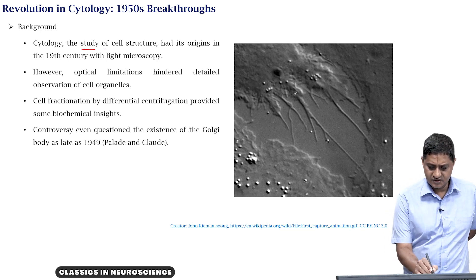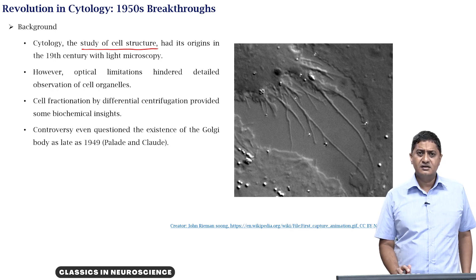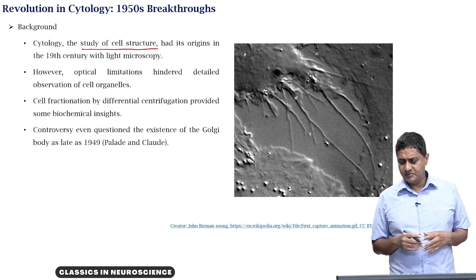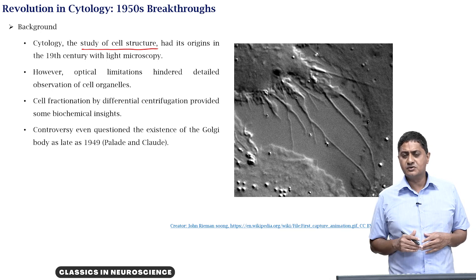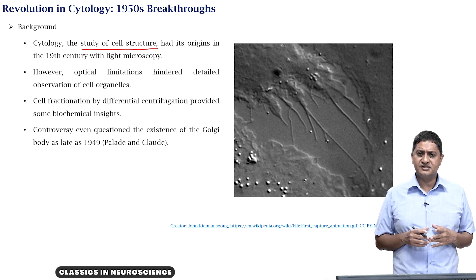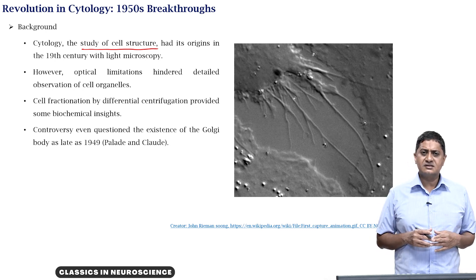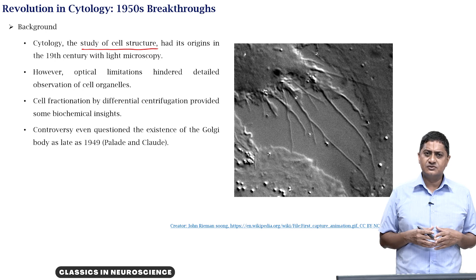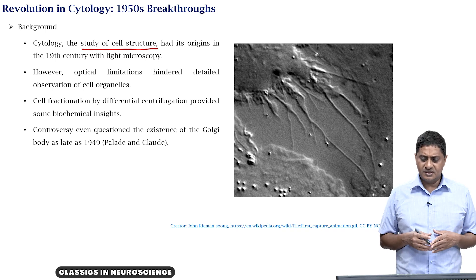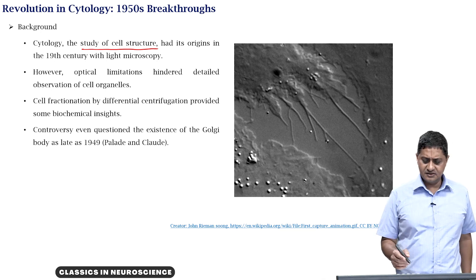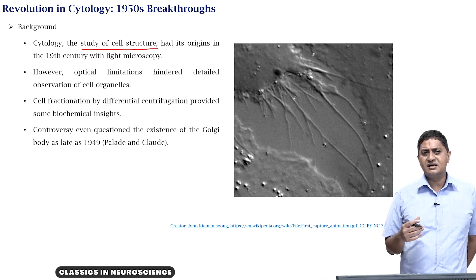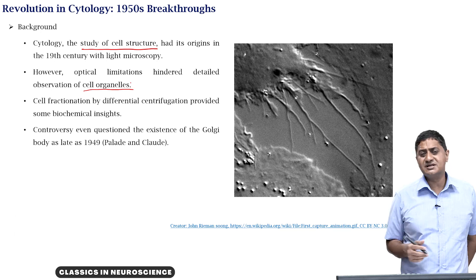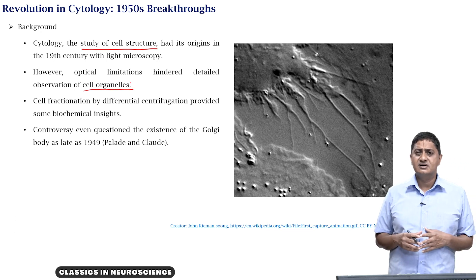Cytology refers to the study of the structure of cells and was essentially carried out using the light microscope. The pictures similar to the one shown here is what is usually obtained with the light microscope. There is a tremendous amount of limitation because light is used to study, so there are optical limitations that challenge any possible observation of the inside of the cell — organelles may not be easy to visualize just with the help of a light microscope.